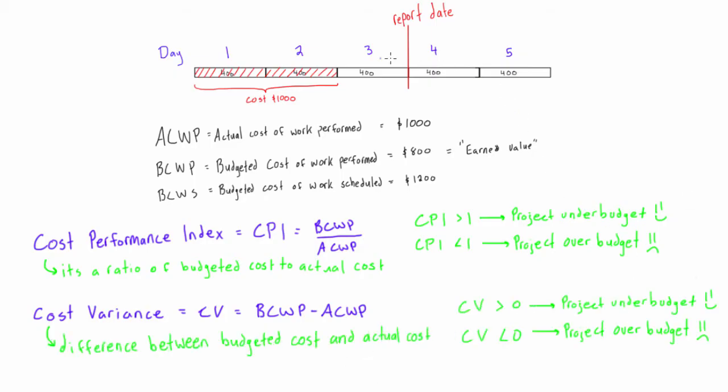So let's take a look at the example from the last video. Let's find out the CPI. So we have CPI is equal to BCWP—we had 800—over ACWP, which is 1000, and that gives us a value of 0.8. 0.8 is less than 1, so for the CPI this project is over budget, so we get a big frown face.